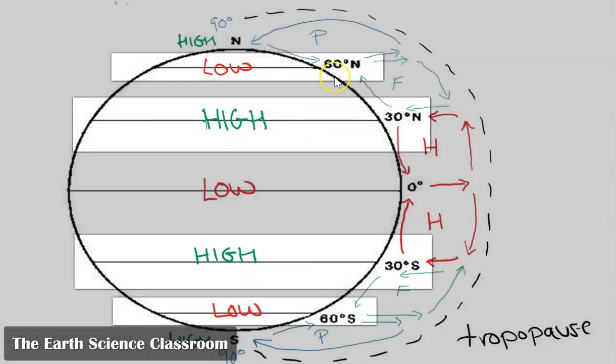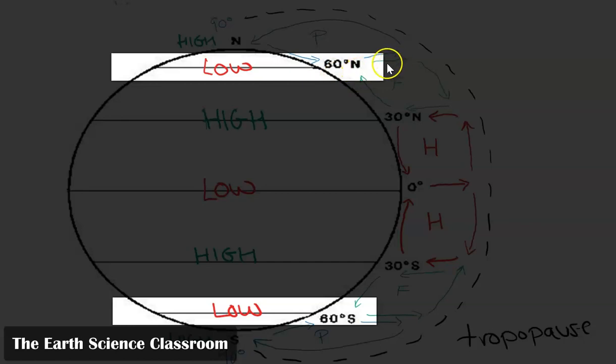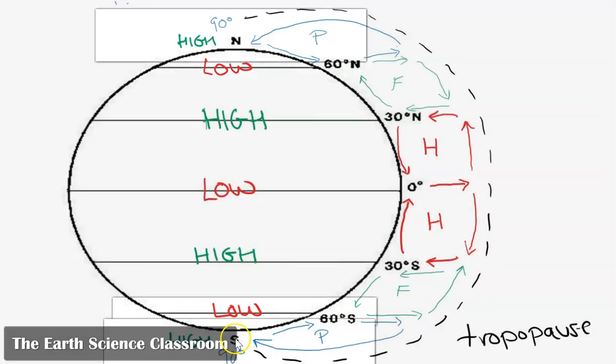Then we have the low pressure at 60 degrees north, which is again showing how air is rising between the Ferrel and the polar cell, and the same down here in the southern hemisphere where the air is rising at 60 south, and you have these belts or consistent zones of low pressure in this part of the world.